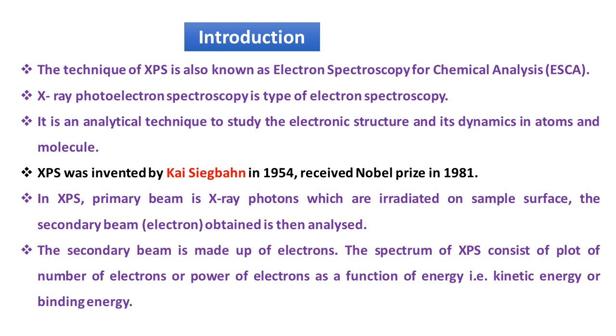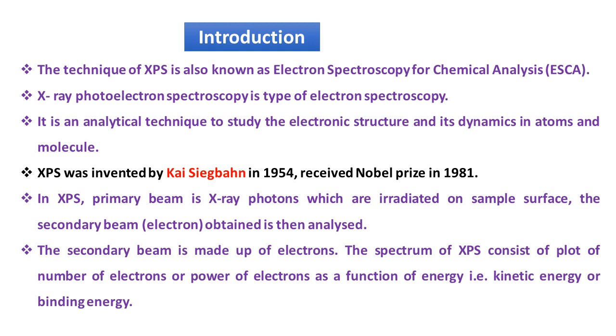In XPS the primary beam is X-ray photons which are irradiated on sample surface. The secondary beam is electrons obtained then analyzed. The spectrum of XPS consists of a plot of number of electrons or power of electrons emitted from the sample surface as a function of energy, that is kinetic energy or binding energy.